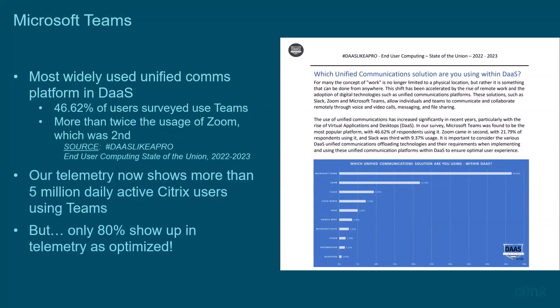From our own usage telemetry, there are more than five million daily active users for Teams on Citrix, but the same telemetry shows us that only 80% of those are in optimized mode, which is a concern.